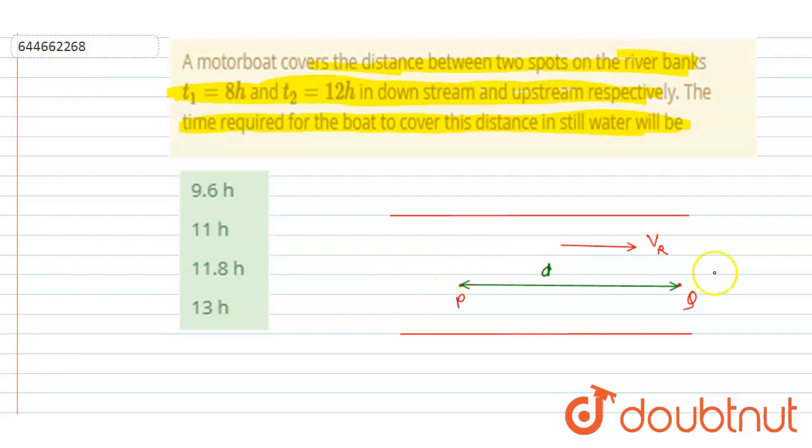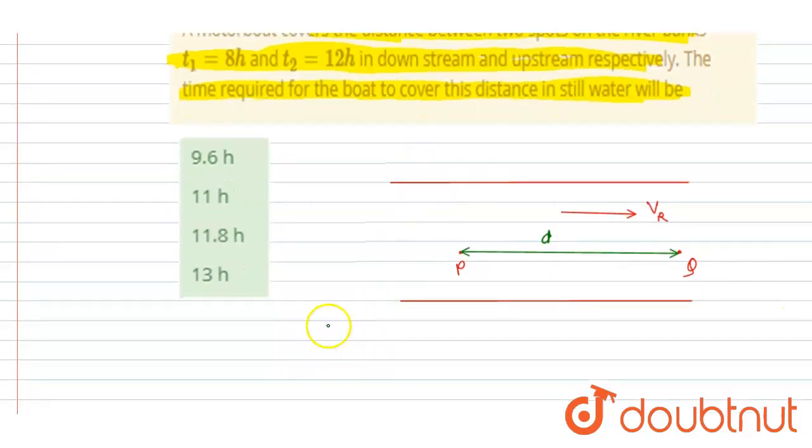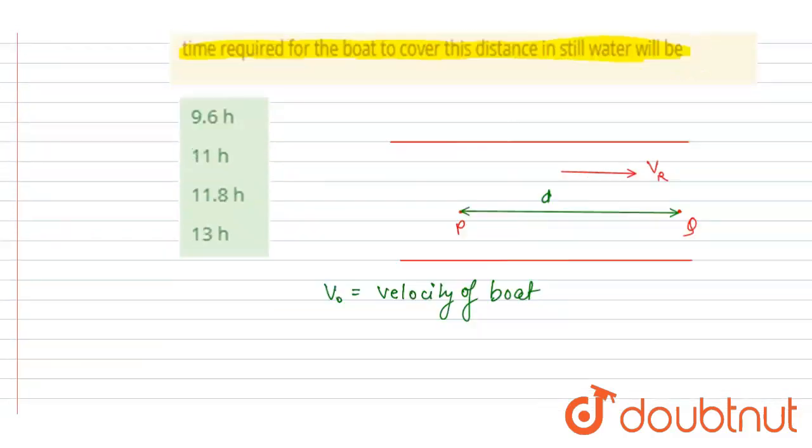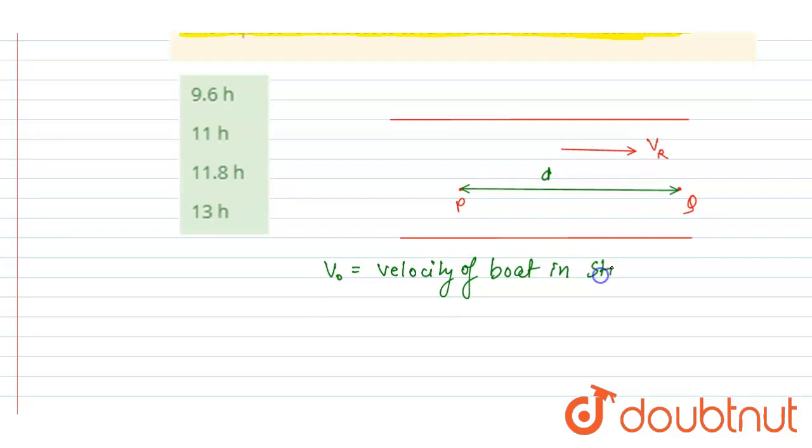And if you see here, the man's velocity with respect to river is, let's say, v₀. Velocity of boat in still water. If the water is still, the velocity of boat will be this. So if you see, if I calculate the velocity in upstream and in downstream, in upstream it will be moving in opposite direction to that of the river, so it will be having this much velocity with respect to ground.